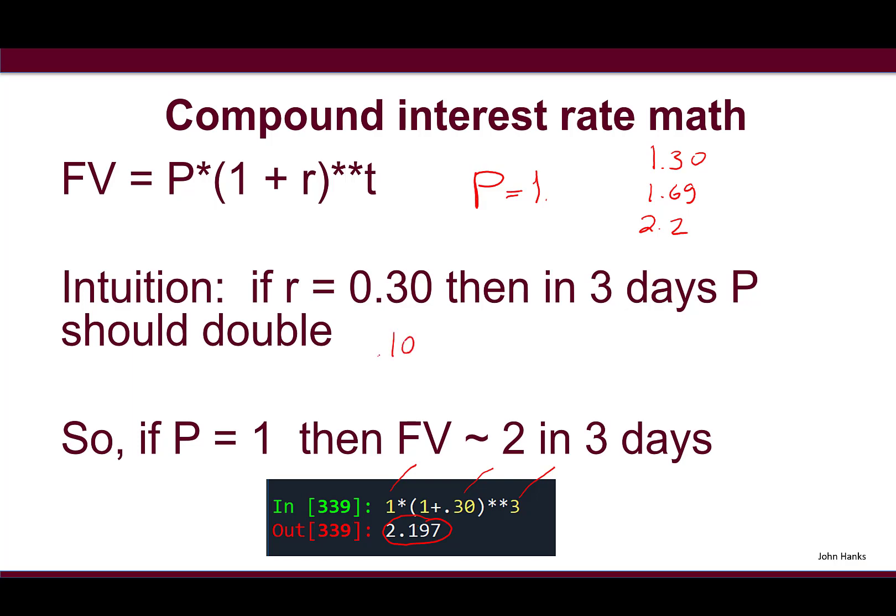If the growth rate was 10%, approximately 9-10 days we'd know off the top of our heads that would double the number. Italy's doubling every three days where China's doubling about every 10 days, so Italy should eventually catch up on the China infection growth rates.